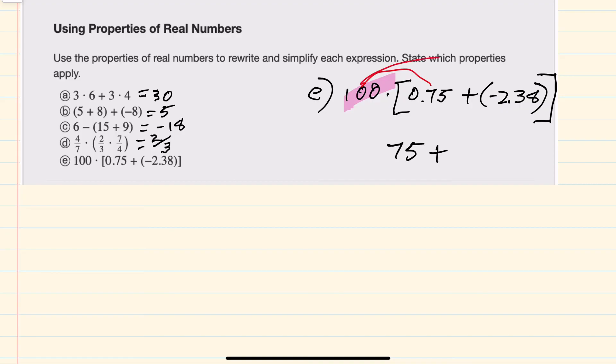then multiplying 100 times negative 2.38 would be a minus 238, and then I can combine. Since those signs are different, I could subtract to get 163, with the larger sign being negative. This would be negative 163.